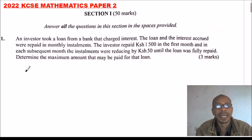In the first month, and each subsequent month the installments were reducing by 50 shillings until the loan was fully paid. Determine the maximum amount that may be paid for that loan. Looking at the question, it is from the topic series and sequence.